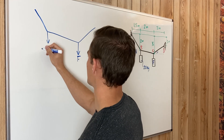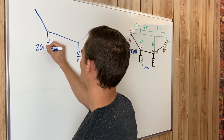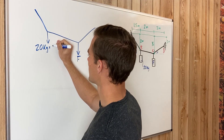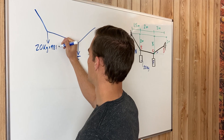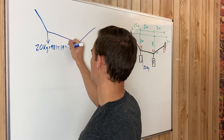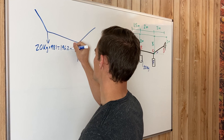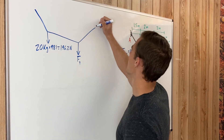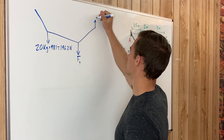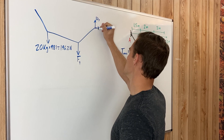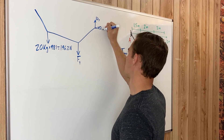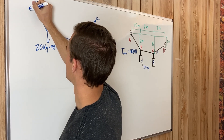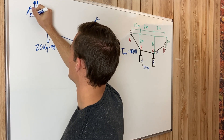We have our F sub y, the force of the unknown weight pulling down. We have this load, which is 20 kilograms multiplied by 9.8, giving 196.2 newtons — that is the force pulling down. We'll call the unknown force F sub y. Then we have our reaction forces: D sub y, D sub x, A sub y, and A sub x.